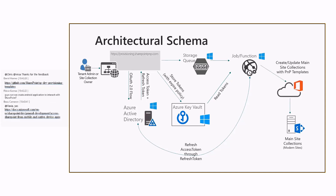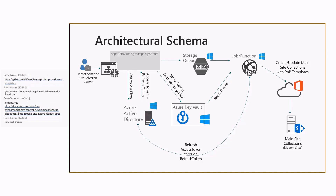We use those tokens to talk with Microsoft Graph, the SharePoint Online REST APIs, and any other APIs needed. By doing that, we create the site, provision the artifacts, and do everything needed to provision the template onto your tenant. Once the job is completed, we get rid of the tokens — removing them from Azure Key Vault — so we don't retain any sensitive information on our side.